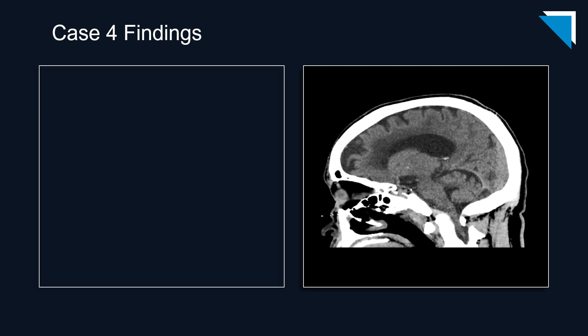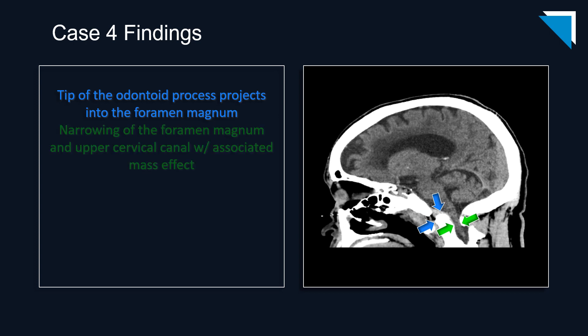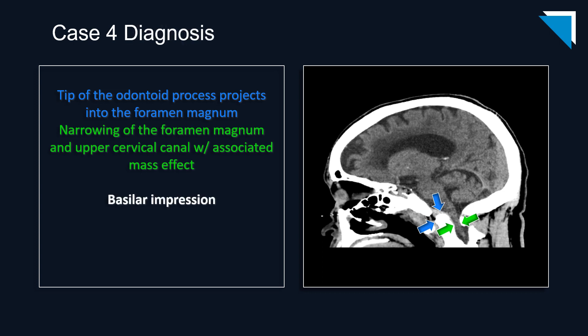Here is a single slice from the sagittal series. Note the tip of the odontoid process projecting into the foramen magnum, resulting in mass effect on the upper cervical cord. This is a case of basilar impression. It's not something we typically look for, but it should be included in your search pattern, especially when you have the reformatted images.